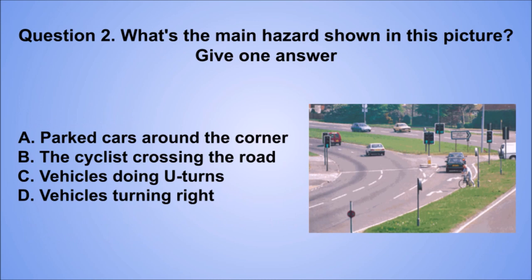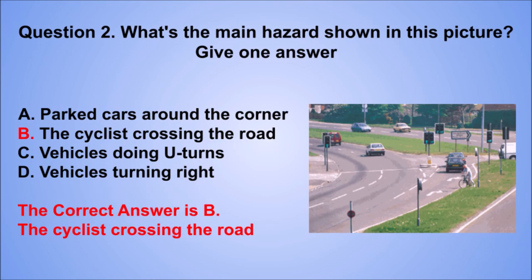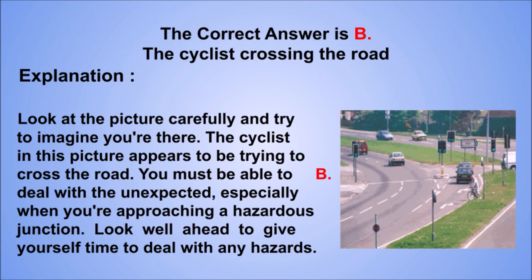Question 2. What's the main hazard shown in this picture? Give one answer. A. Parked cars around the corner. B. The cyclist crossing the road. C. Vehicles doing U-turns. D. Vehicles turning right. The correct answer is B, the cyclist crossing the road. Look at the picture carefully and try to imagine you're there. The cyclist appears to be trying to cross the road. You must be able to deal with the unexpected, especially when approaching a hazardous junction. Look well ahead to give yourself time to deal with any hazards.